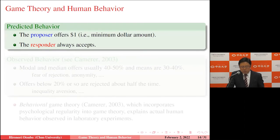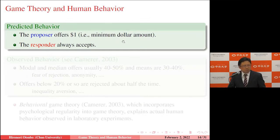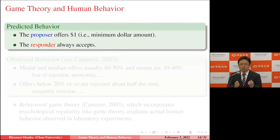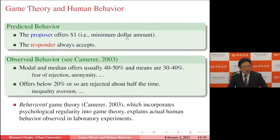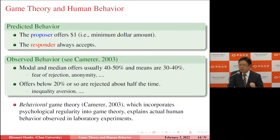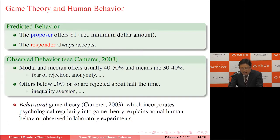The predicted behavior: proposer offers $1 and responder always accepts. In fact, replications of the ultimatum bargaining experiment have been done extensively worldwide with very regular results. According to a survey by Colin Camerer, a famous behavioral economist and psychologist at Caltech, the modal and median offers are usually 40–50% of the total — here, $4 or $5. Mean offers are 30–40%, and offers below 20% are rejected about half the time.